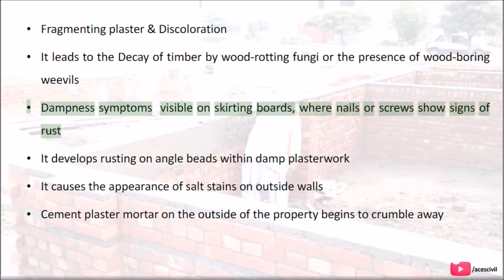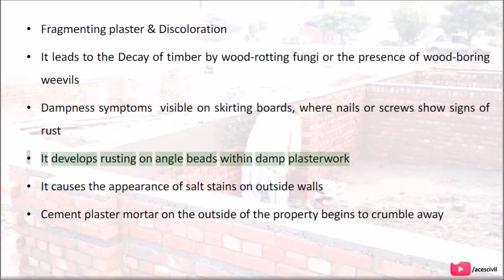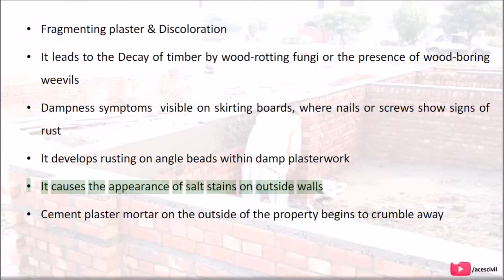Dampness leads to the decay of timber by wood rotting fungi or the presence of wood boring weevils. Dampness symptoms are visible on skirting boards where nails or screws show signs of rust. It develops rusting on angle beads within damp plasterwork, causes the appearance of salt stains on outside walls, and cement plaster mortar on the outside begins to crumble away.